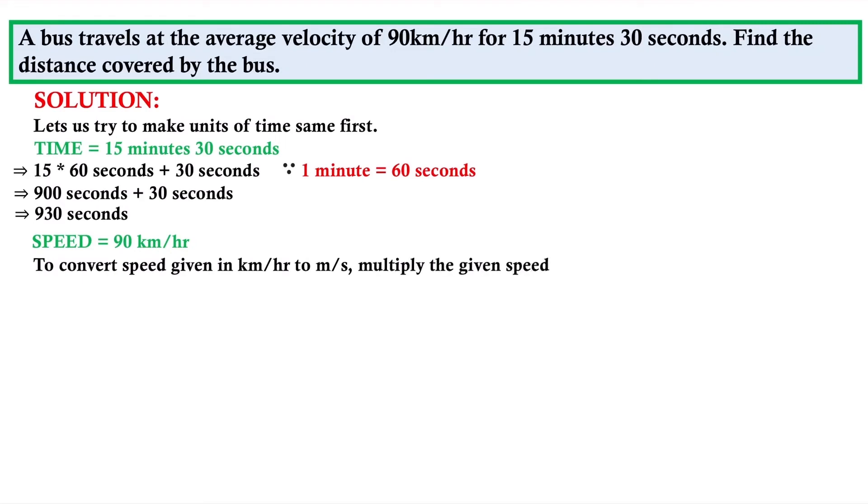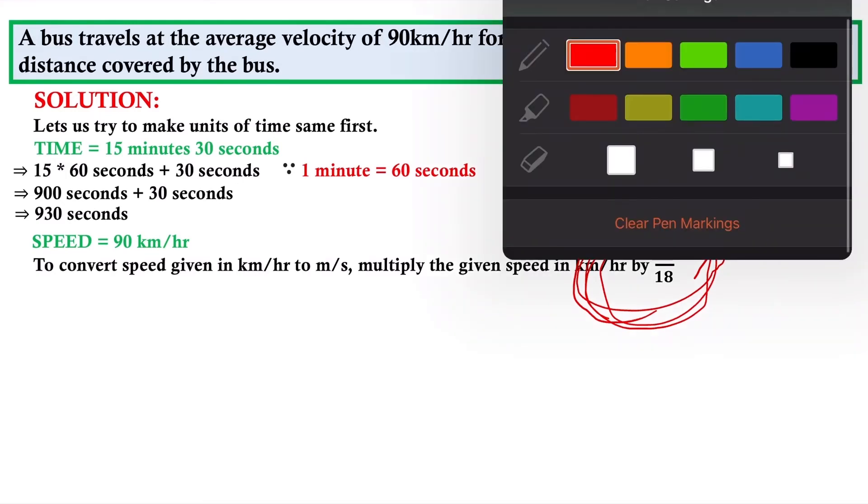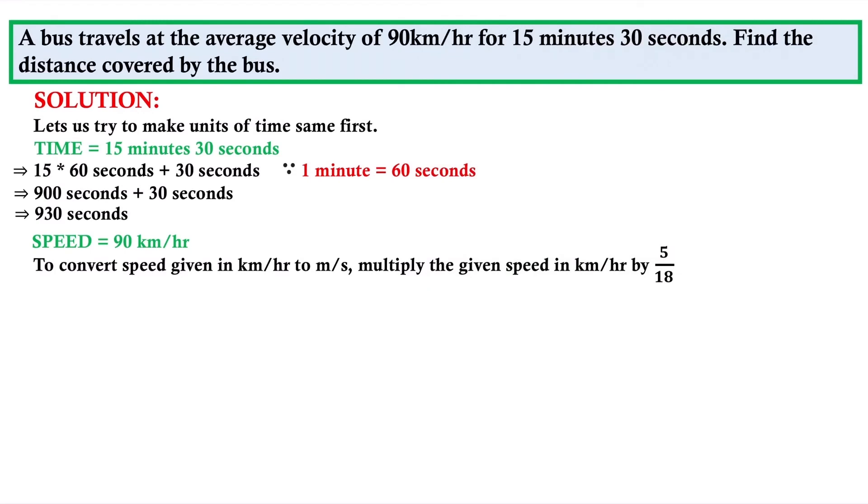The speed is in kilometer per hour and we have to convert into meter per second. To convert the speed from km/hr to m/s, multiply the given speed by 5 by 18. If the speed is given in m/s and we need km/hr, multiply by 18 by 5.